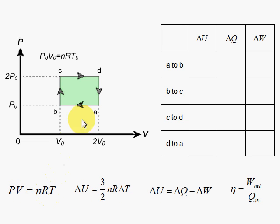PV is NRT, which we already have used. And the change in internal energy is equal to 3 halves NR delta T. And the first law of thermodynamics, the change in energy is equal to the heat flowing in, minus the work done by expansion.